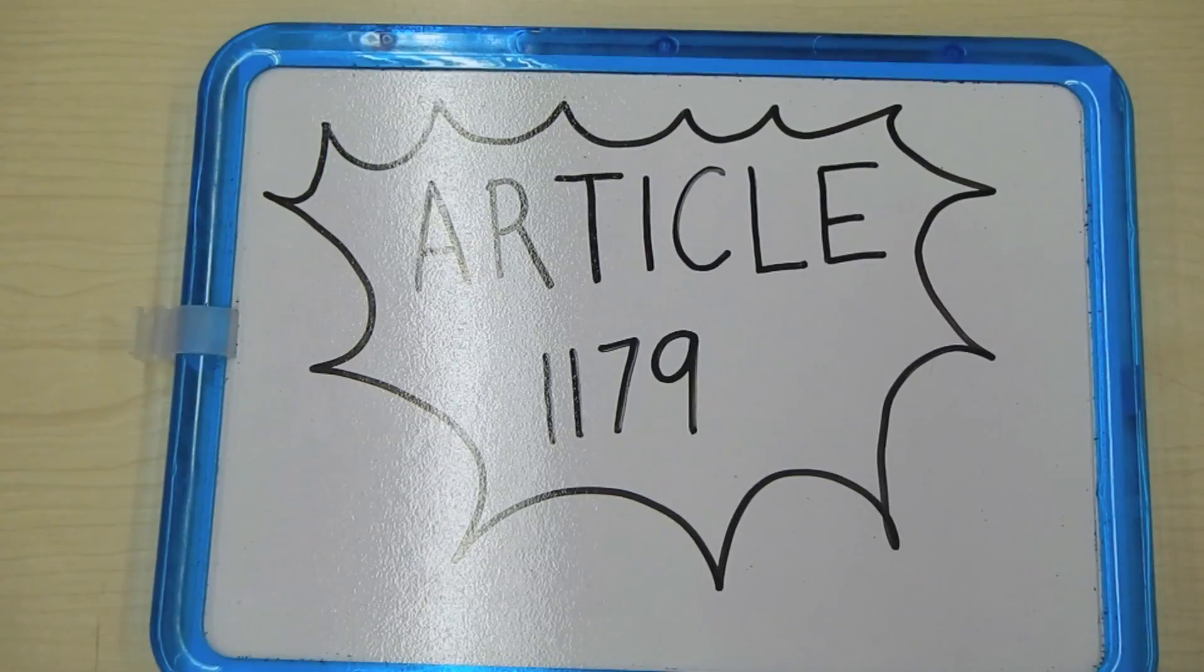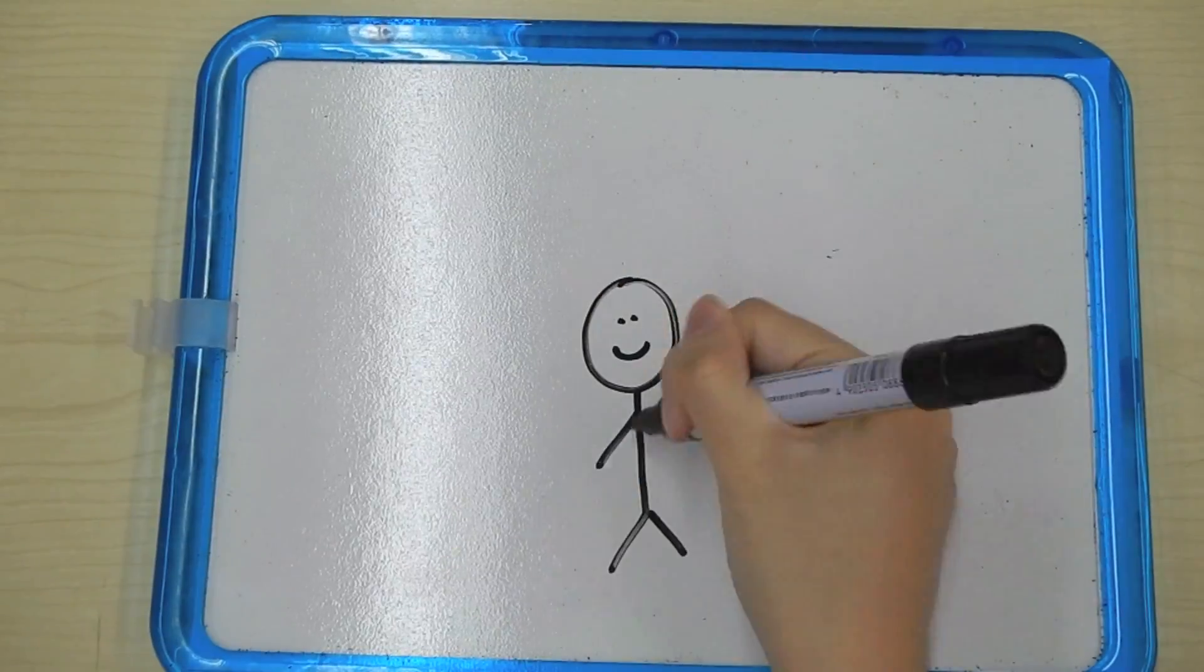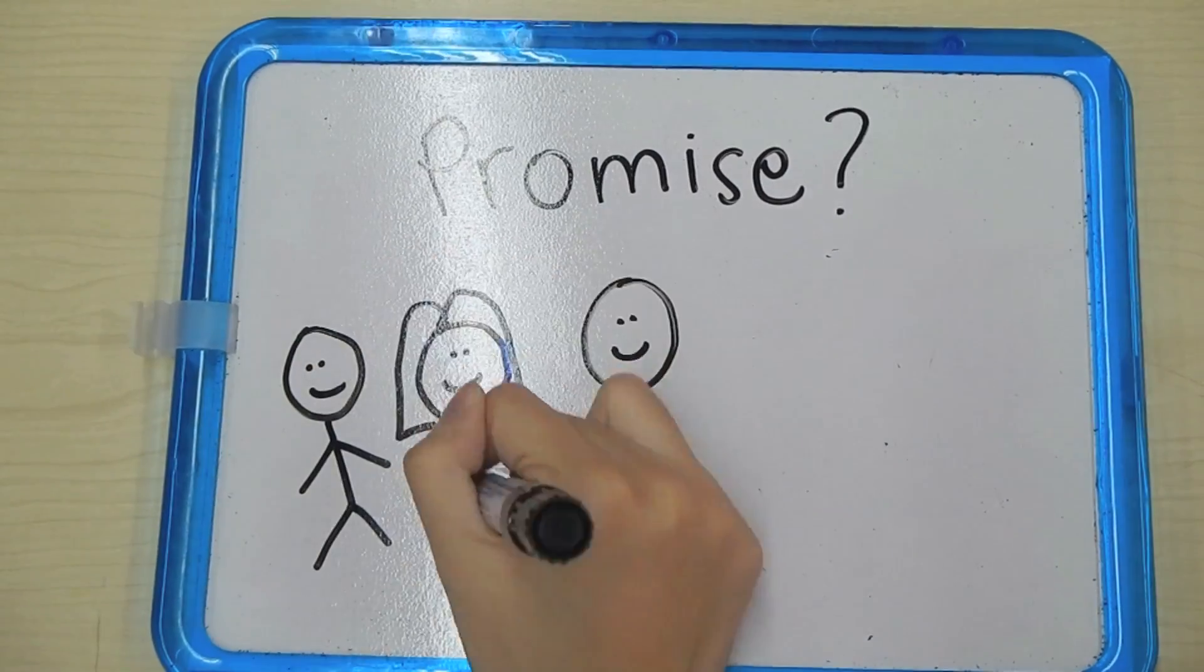Article 1179 of the Civil Code. Have you ever experienced being promised something by a parent or a friend?